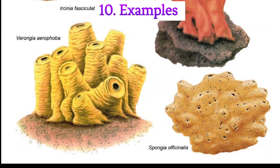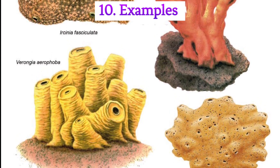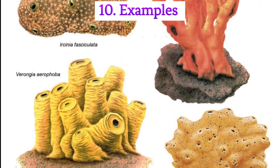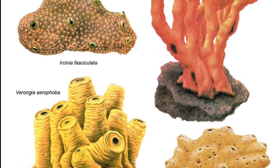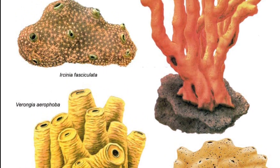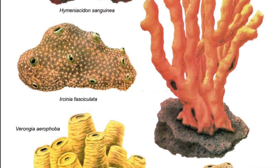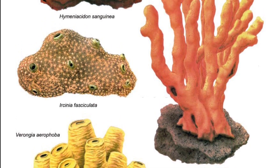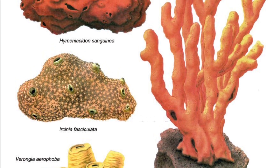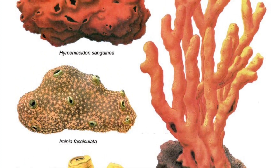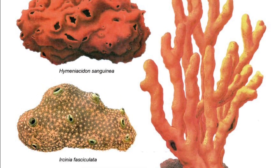Examples: Sea sponge — found in marine environments, sea sponges are known for their filter-feeding abilities and are essential components of coral reef ecosystems. Glass sponge — these sponges have siliceous spicules and are often found in deep-sea habitats. Freshwater sponge — family Spongillidae — some sponges adapt to freshwater environments like rivers and lakes, and play roles in their respective ecosystems.